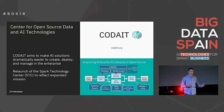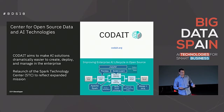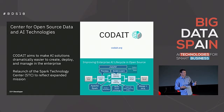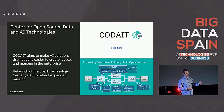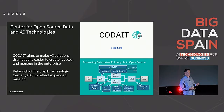The CODAIT team within IBM — when I joined, it was known as the Spark Technology Center, founded by IBM to focus on the Apache Spark project and the surrounding ecosystem. It's a purely open source team working in the community — everything we do is in the open. More recently, the focus evolved to encompass the entire end-to-end enterprise AI lifecycle. We aim to make it easier to create, deploy, and manage AI applications in the enterprise.